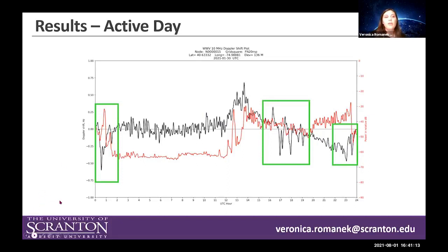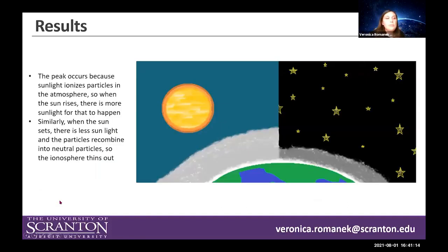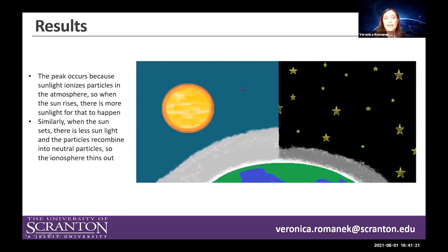The reason for the sunrise peak and sunset dip is that sunlight ionizes particles in the atmosphere. When the sun rises, there's more sunlight causing more ionization. When the sun sets, there's less sunlight, and the particles recombine into neutral particles, so the ionosphere thins out.